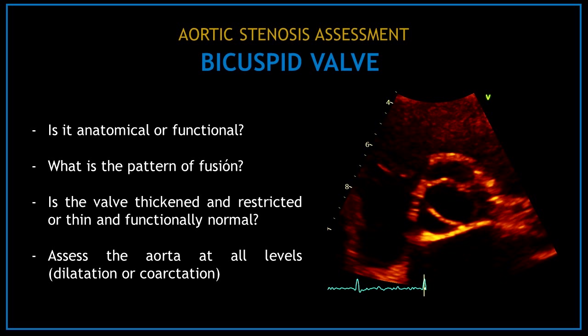A separate video will cover bicuspid valves in detail. However, when you find a bicuspid valve, you should ask: Is it anatomical or functional? What is the pattern of fusion? Is the valve thickened and restricted, or thin and functionally normal? You should also assess the aorta at all levels to look for dilatation or coarctation.